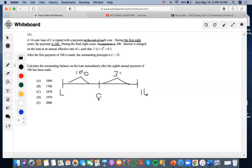Interest is charged on the loan at an annual rate of I, such that this is another way of saying that V equals 23, that's what I'm doing here. Now, after the first payment of 100 is made, the outstanding balance is L plus 25.